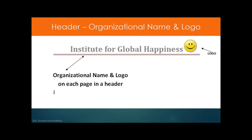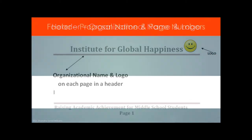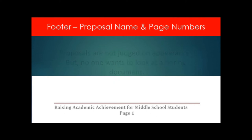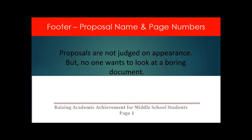You want to make sure that you have a header in your proposal. It simply makes the document look better, and it's also easier for the staff and the reviewers to know who is writing and for what purpose. You can see I have an example of a footer: 'Raising Academic Achievement for Middle School Students,' as well as a page number. Yours doesn't have to be this large, but I enlarged this just for presentation purposes.